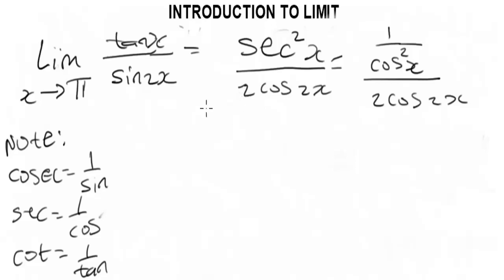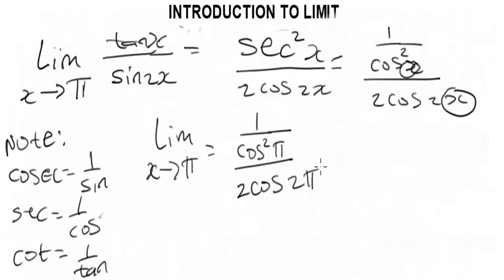Okay, so having known that, let's keep simplifying this. So limit x tends to π will be, so using L'Hôpital's rule, 1 over cos squared π over 2 cos 2π. Okay, so when you put π in this x, you're going to have over 2 cos 2π.